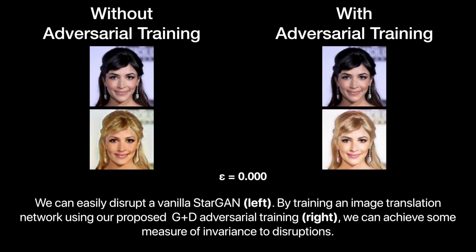We can easily disrupt the vanilla StarGAN, shown on the left. By training an image translation network using our proposed G plus T adversarial training, shown on the right, we can achieve some measure of invariance to disruptions.